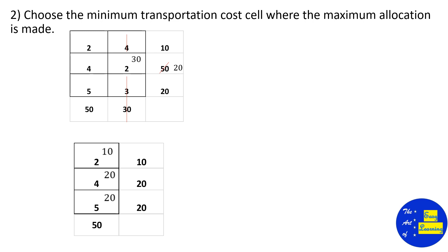The requirement for that column is 50. We can allocate only 10 from the first row, so 10 is allocated and that row is cancelled. The remaining value is 40, and the next cell has cost 4, so 20 is allocated. For the next cell with cost 5, we allocate 20, and it is balanced. All requirements are satisfied.